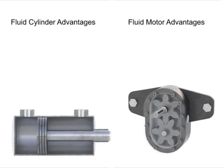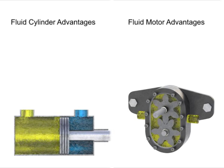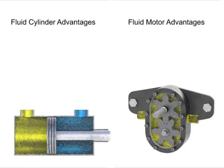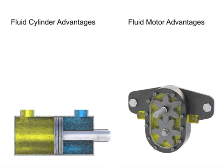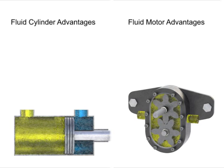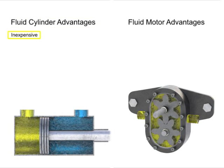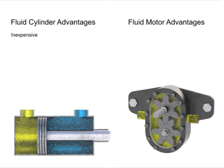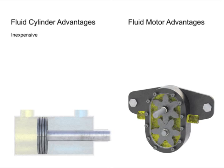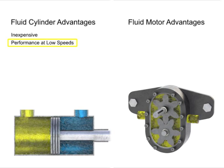Whether to use a cylinder or fluid motor depends upon its application and the type of load to be moved. At first glance, it may seem that cylinders are the better choice. For applications where either can be used, a cylinder is typically less costly compared with a fluid motor of the same horsepower. Cylinders have leak-tight, non-metallic piston seals, which will give consistent performance at very slow speeds against a wide range of load resistance.